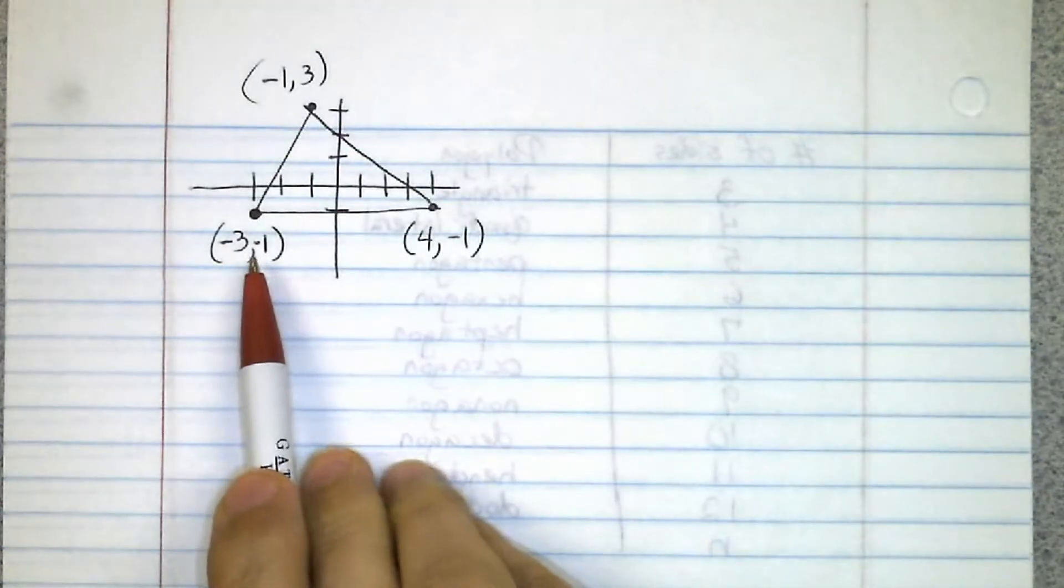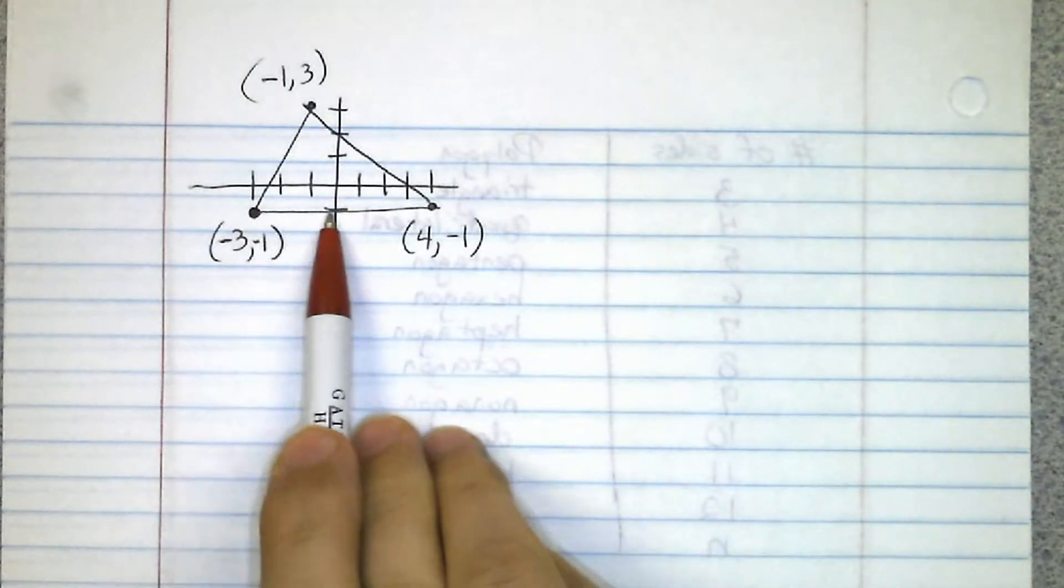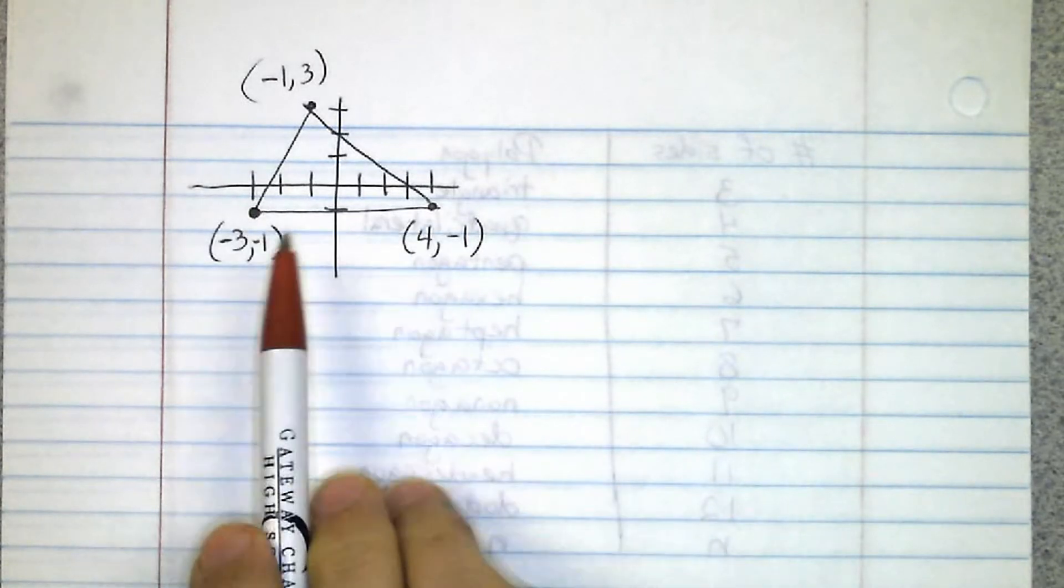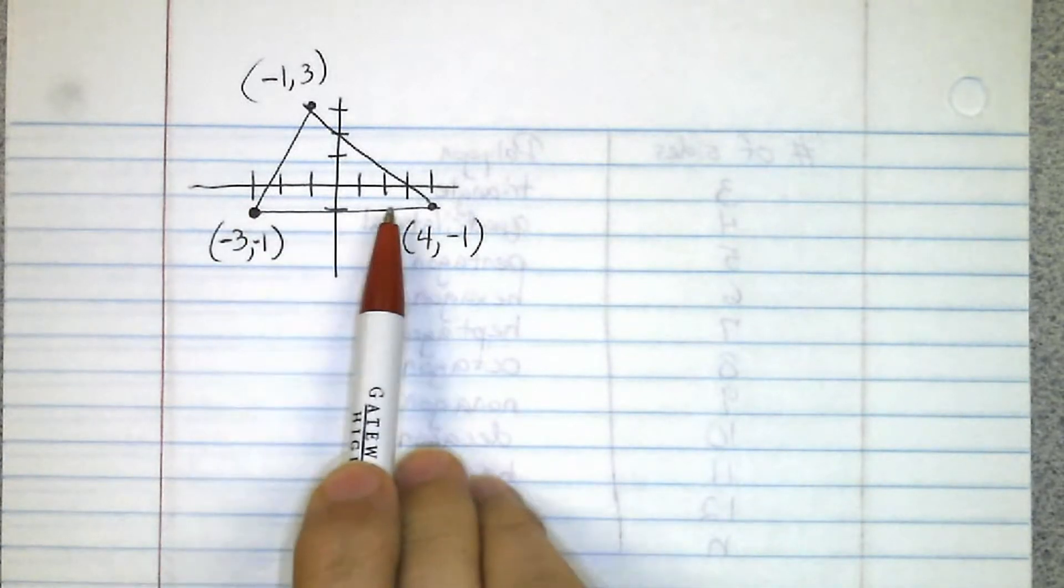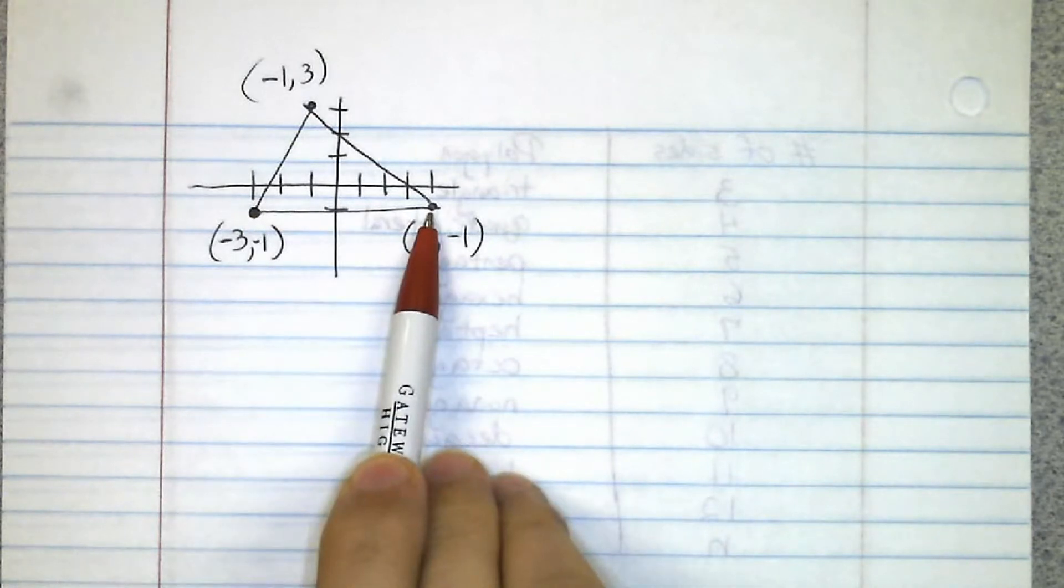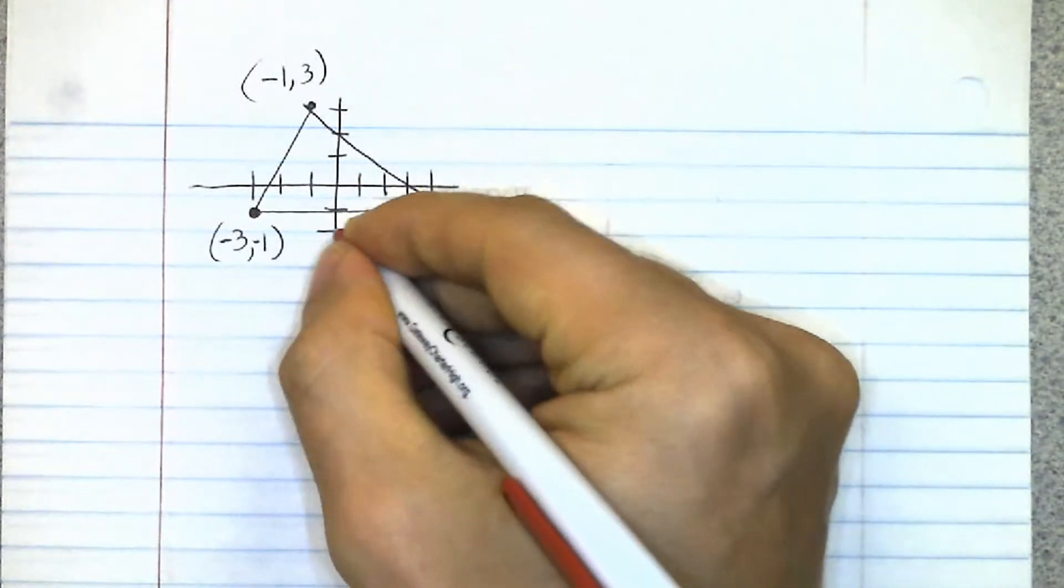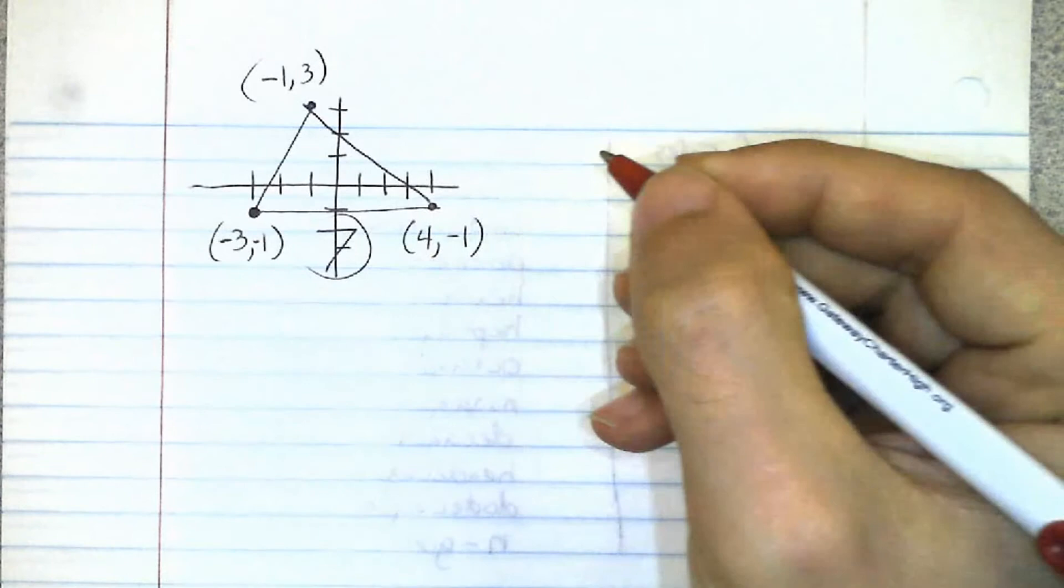So I know that if I'm going from negative three to four, that's a total distance of seven units. So I know that right there: seven units. So I only need to find two more.